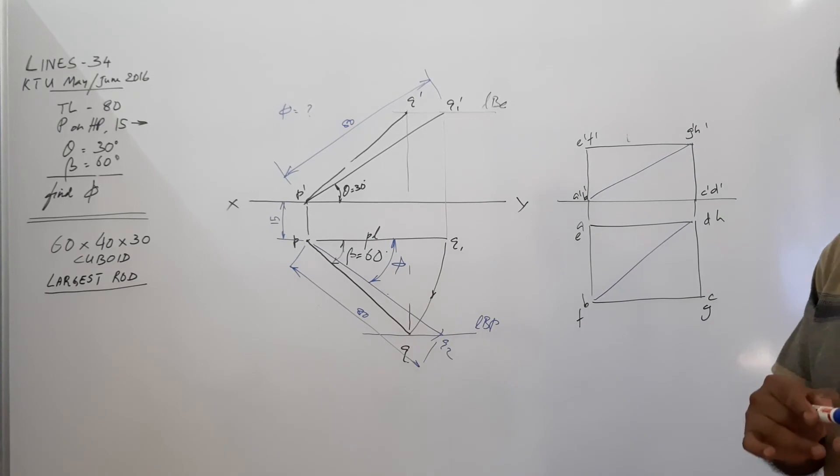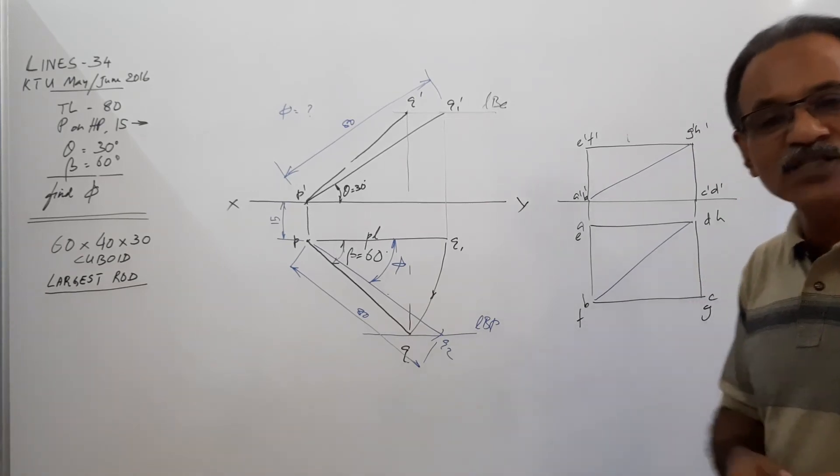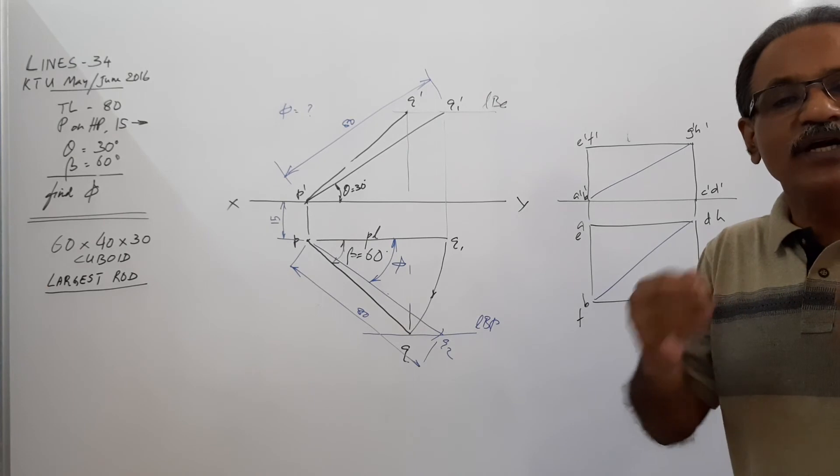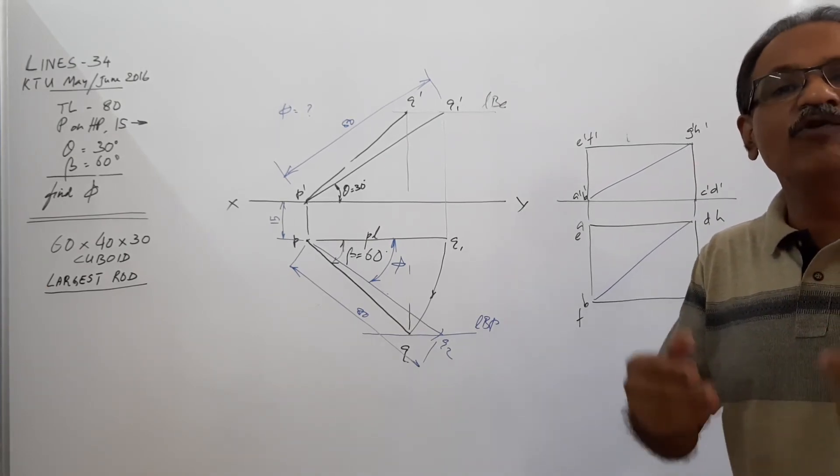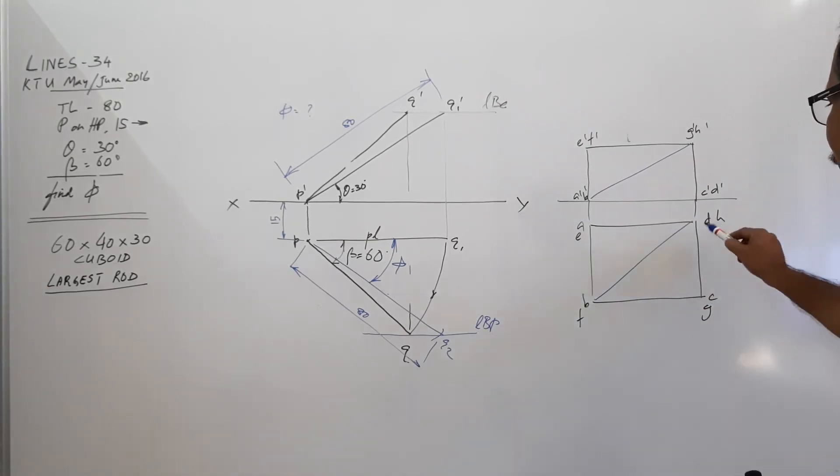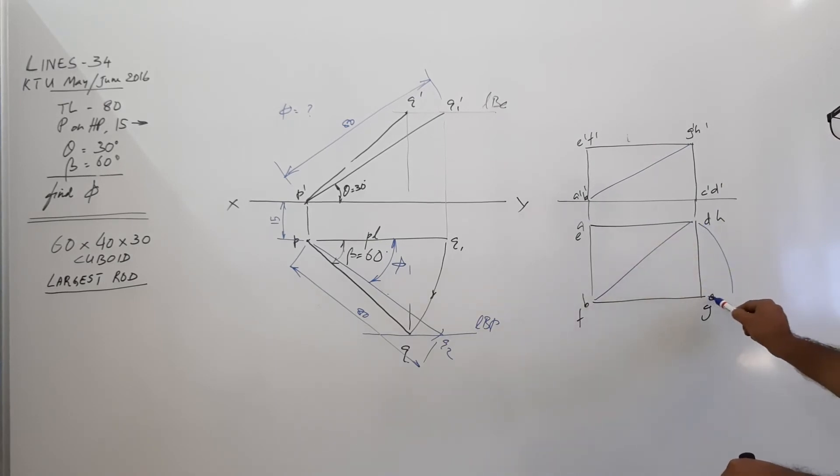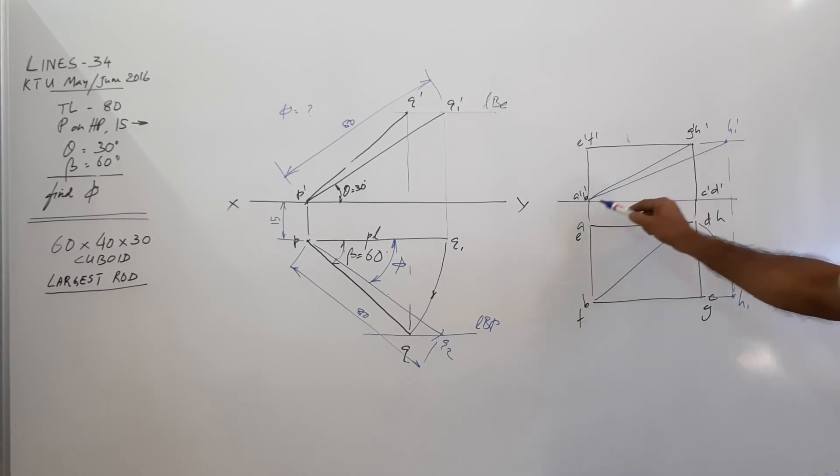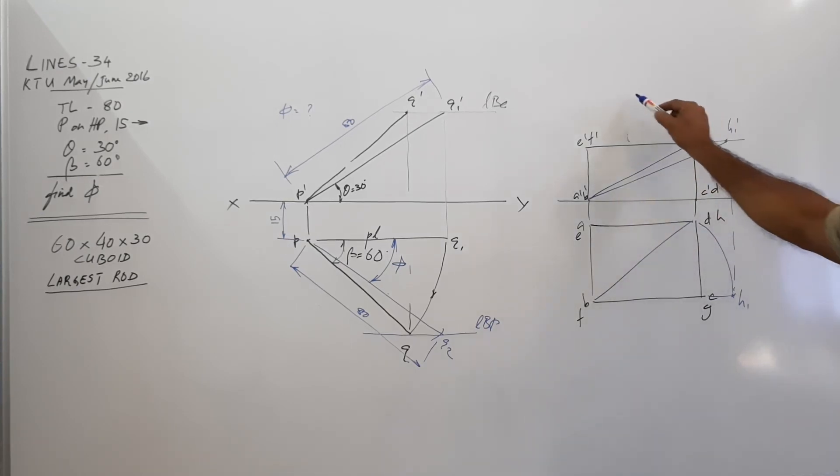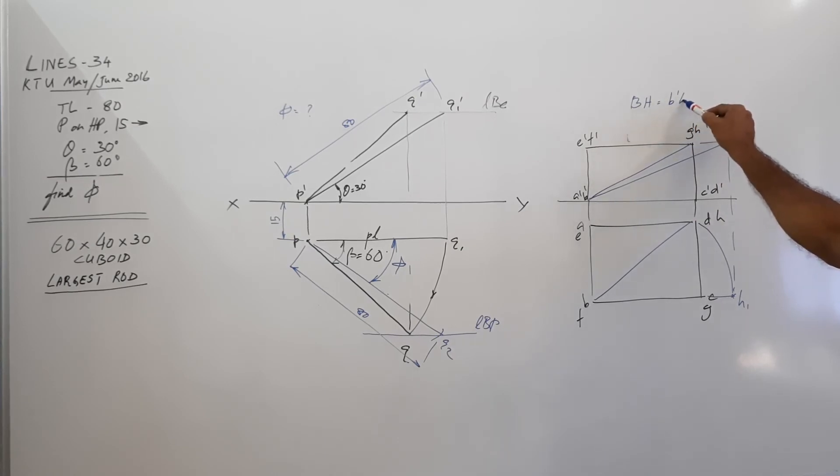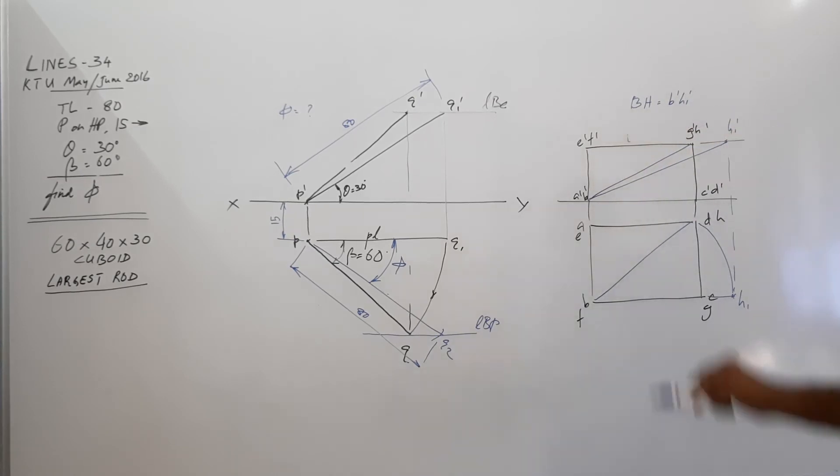So if you keep a rod inside touching B and touching H, that is the longest rod. So this is the plan of the longest rod and B dash H dash is the elevation of the longest rod. You are asked to find its true length. It is a line. Simply take it as a line. You are given the plan and elevation of a line and you are asked to find the true length. What will you do? Make the plan parallel to XY, H1. Project it to this locus, H1 dash. Connect it. Connect B dash H1 dash. True length of BH is equal to B dash H1 dash.